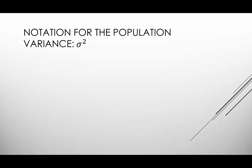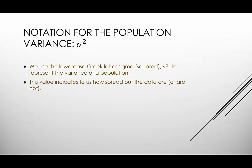Next we're going to look at the notation for population variance. This is sigma squared. Yes we already had sigma that was uppercase sigma. This is lowercase sigma. So there were 24 options for Greek letters and they chose to repeat one. How clever is that? So this is sigma squared. This value indicates to us how spread out the data are or are not.